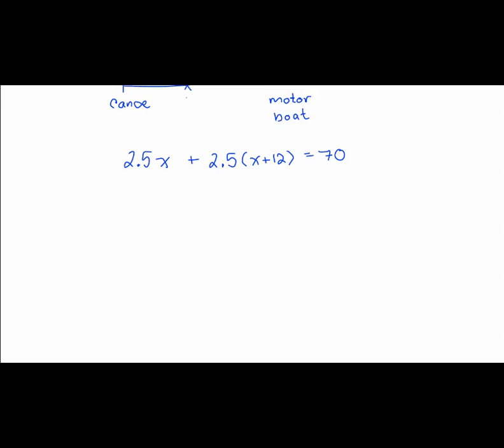So all we have left to do now is solve this linear equation. First I need to distribute into the parentheses. Now I'm going to subtract the 30 to move it over to the right, and in the same step I'll combine the two 2.5x terms to get 5x.